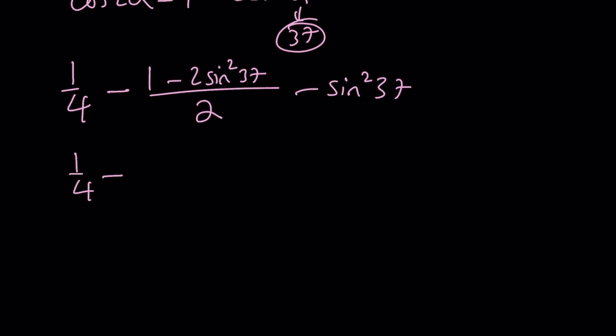One fourth minus one half. Just be careful with the double negatives. That's going to make a positive. In English, sometimes double negative doesn't make a positive. But in math, it does. So now you're going to get positive 2 sine squared 37 divided by 2.